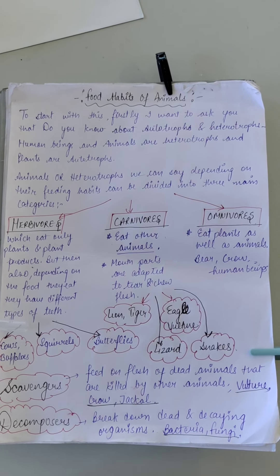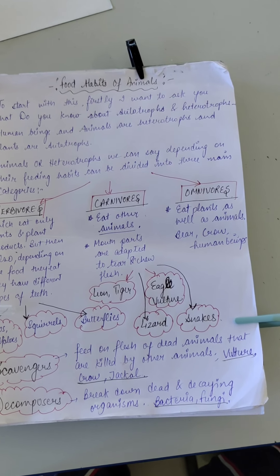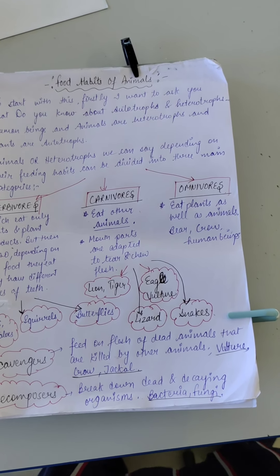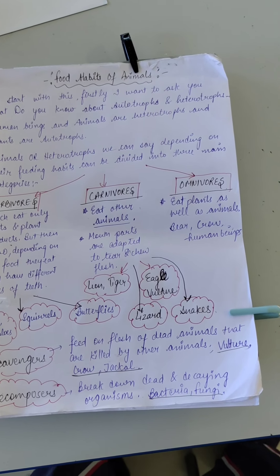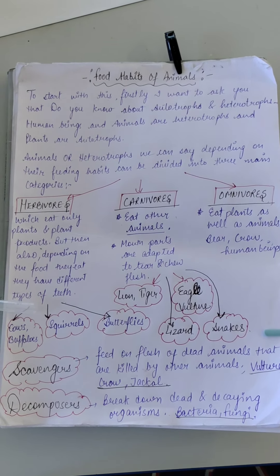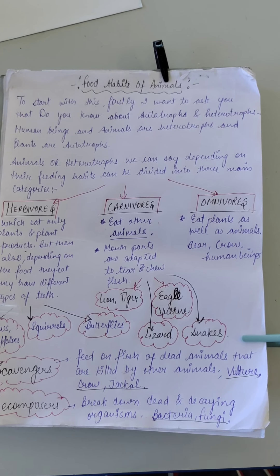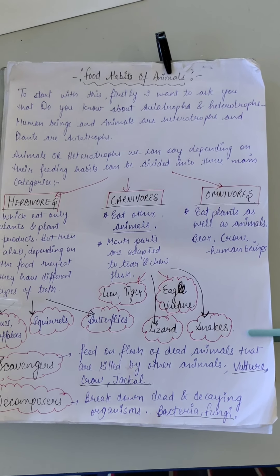What do we eat and what are the things which make us eat those? To start with this concept, I want to ask: are you aware of what are autotrophs and what are heterotrophs? Autotrophs — 'auto' means automatically, 'trophs' means habits or food — so autotrophs are organisms which make their own food. Heterotrophs are the organisms which depend on others for their food.